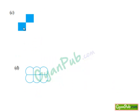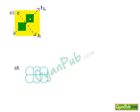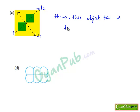Seeing part C, dividing this object through a line, it has two lines of symmetry. For each line, the object is divided and it has identical parts. Hence this object has two lines of symmetry.